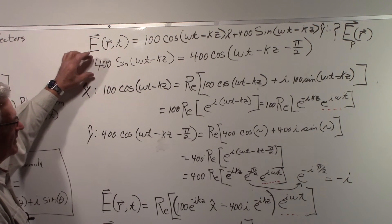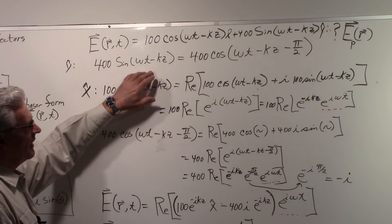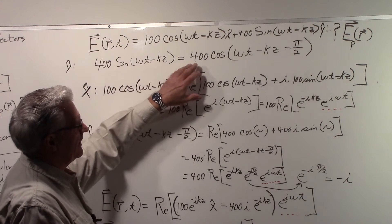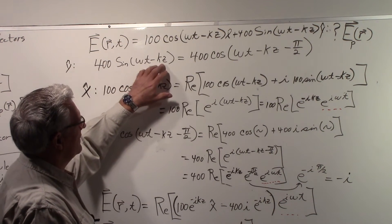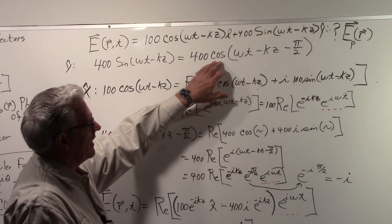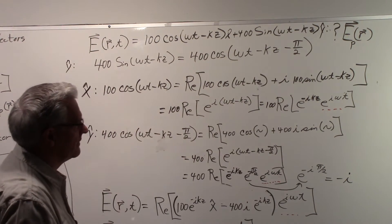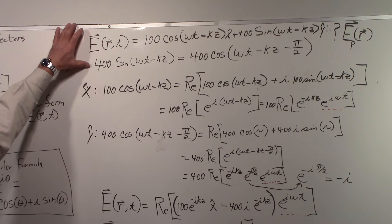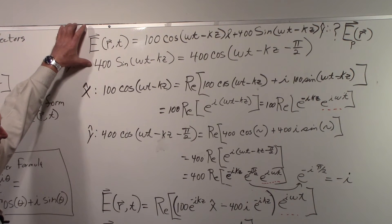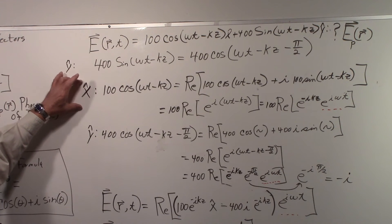The first thing we'll do is we'll look at the y component here. And by using the trig identity, we'll convert that over to a cosine. So we have a cosine of omega t minus kz. Now we're going to have the cosine of omega t minus kz minus pi over 2. That step, although not really necessary, it will make it a little easier in comparison to the way we handle the x component.